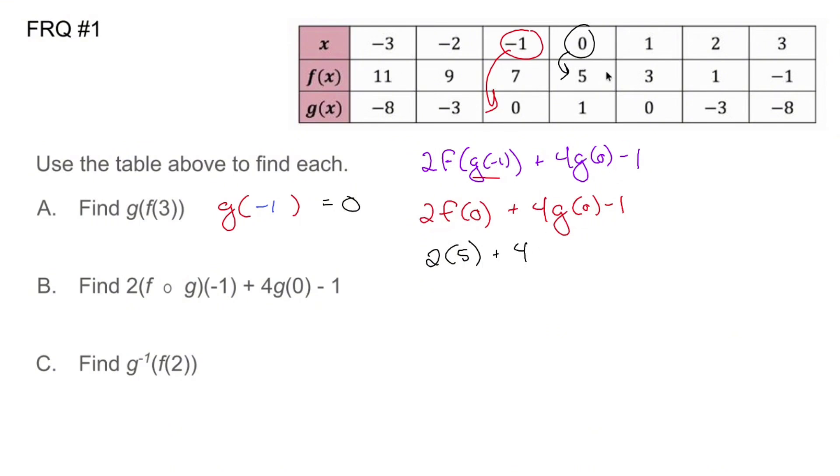Plus four times g of zero is one, so four times one minus one. Two times five is ten. Four times one is four minus one is going to be 14 minus one, which is 13. So b becomes 13.